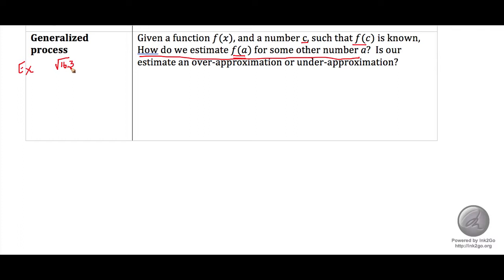So in this case, a would be equal to 16.3. F would be equal to the square root function. And then c, the point such that f of c is known in our previous examples way back two videos ago, c would have been equal to 16.